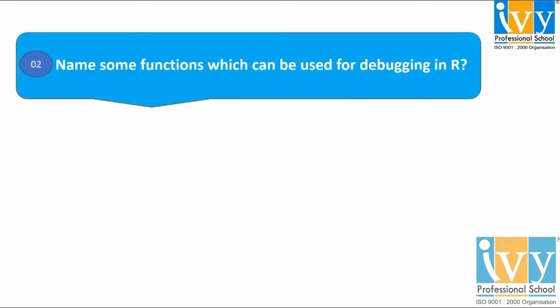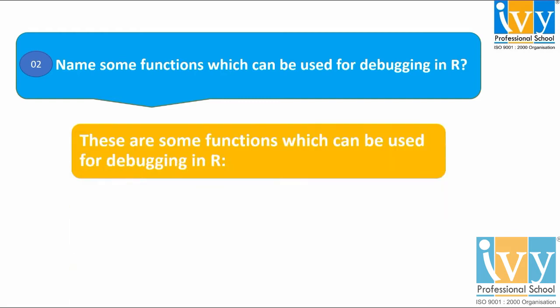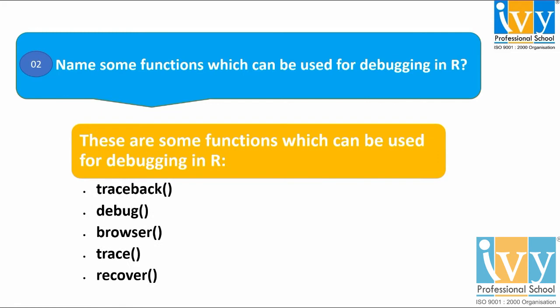The next question asks: name some functions which can be used for debugging in R. The first is traceback. The traceback function is used to give all the information on how a function arrived at an error.